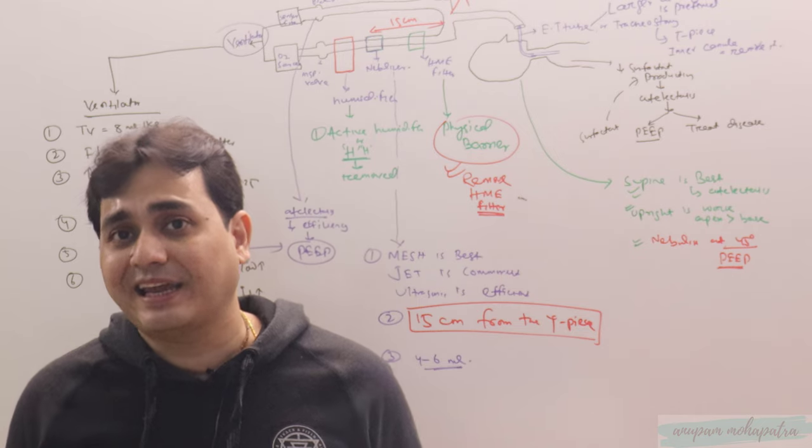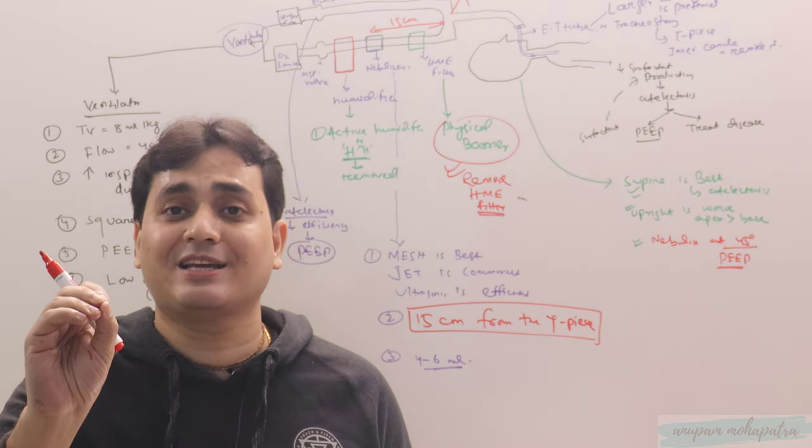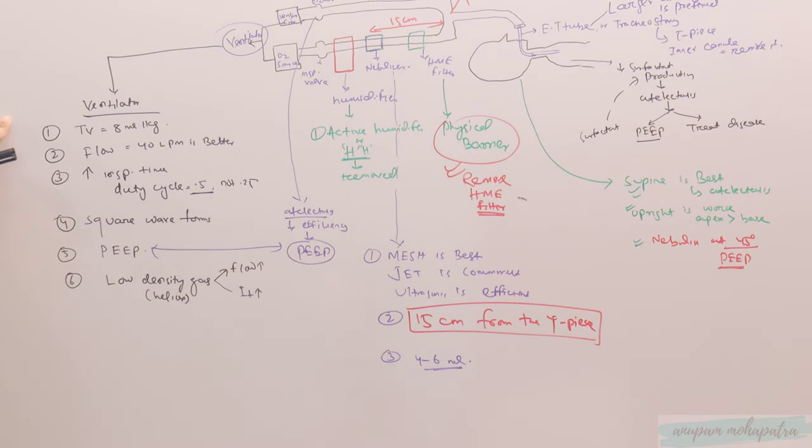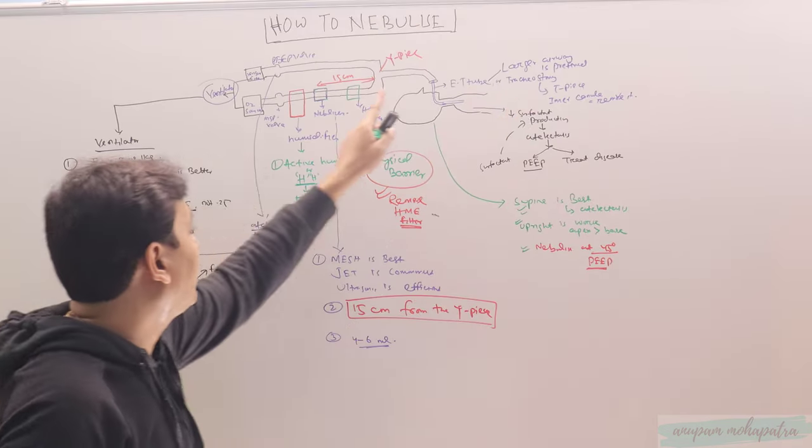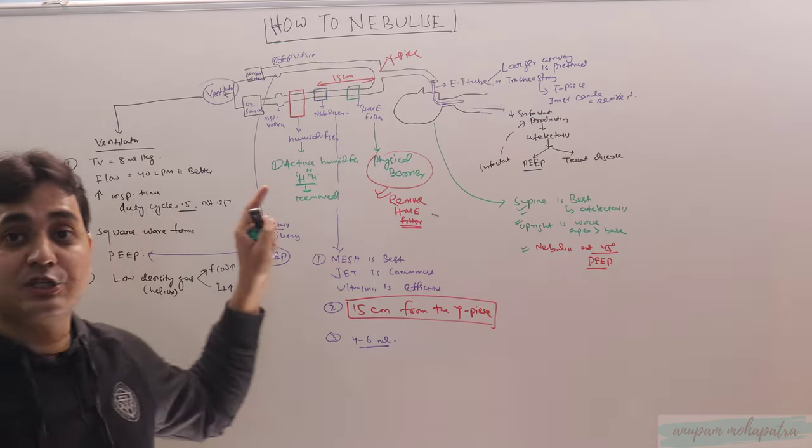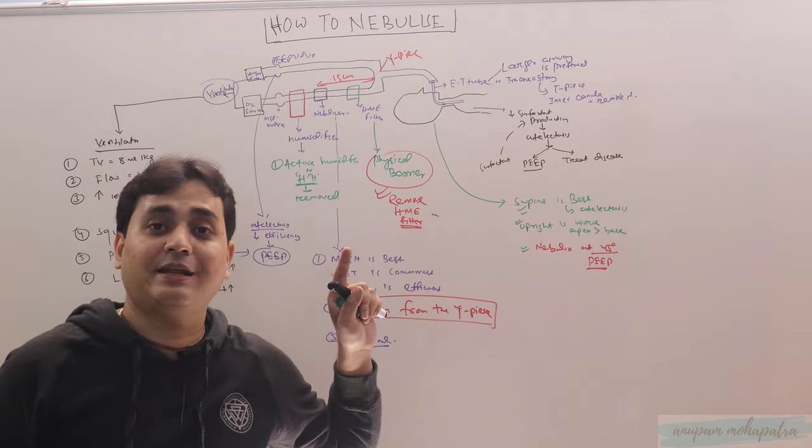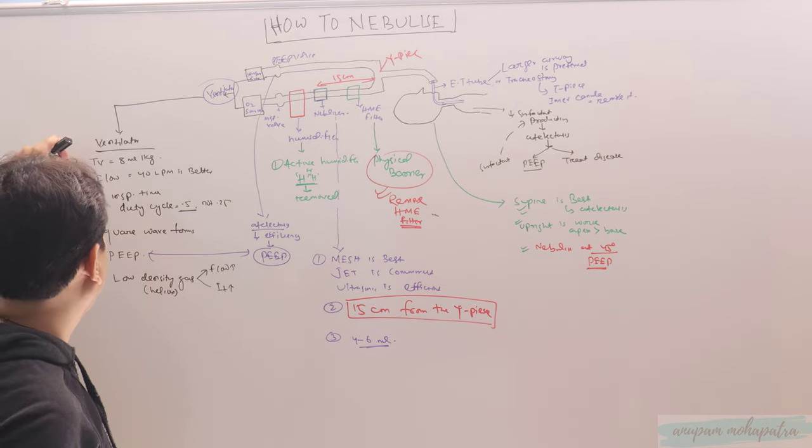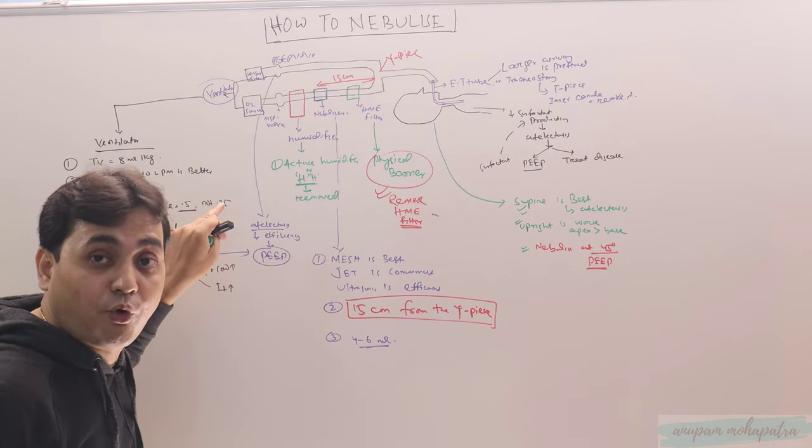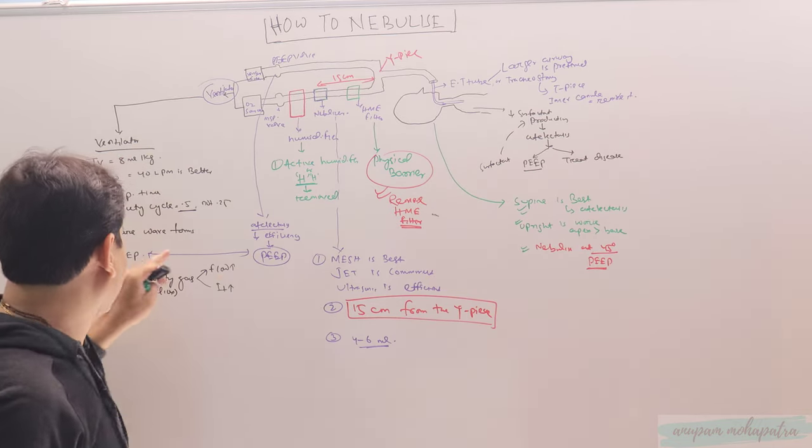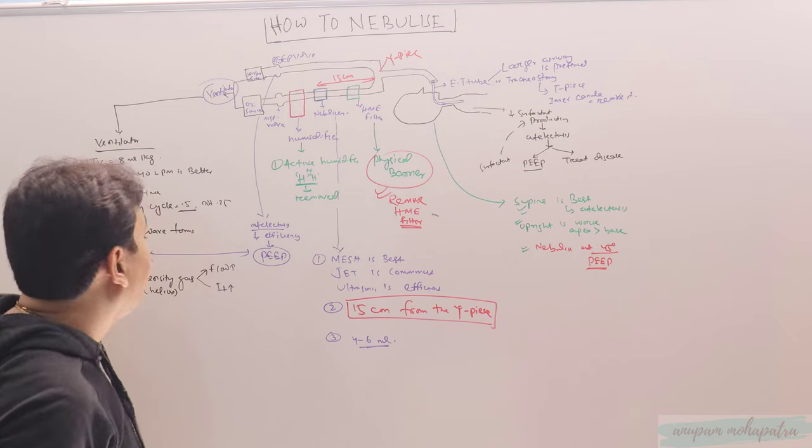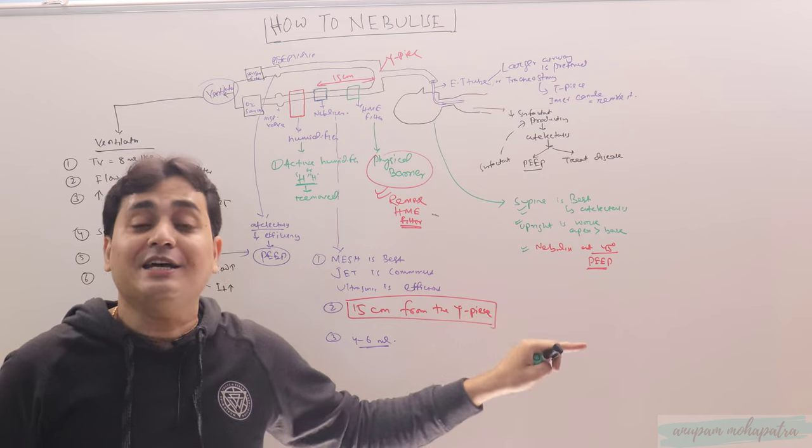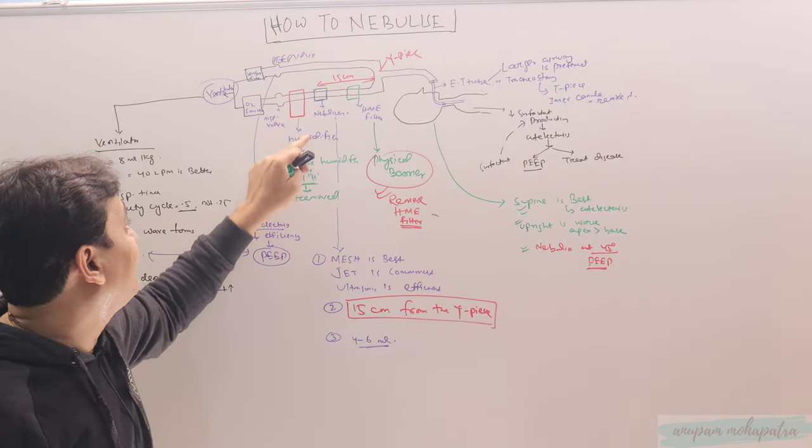These are things that one has to really take care before one starts actually nebulizing a patient. Starting from here, if you take a circle like this, go around and fulfill all the criteria, then the patient will get maximally aerosolized, maximally nebulized. To sum up: you have to give a tidal volume of 8 ml per kg, reduce the flow, then increase the inspiratory time, put the flow waveform at square waveform, use some PEEP, remove the HME filter, remove the heated humidifier.